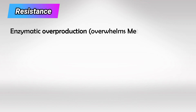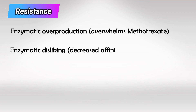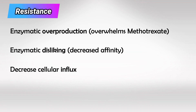The main causes of resistance include overproduction of the enzyme, which is mainly mediated by genetic amplification; decreased affinity of dihydrofolate reductase to methotrexate, meaning the enzyme essentially dislikes methotrexate and uptakes actual functioning folic acid more; or decreased influx of the drug into the cell.